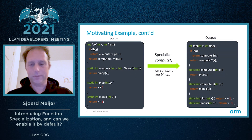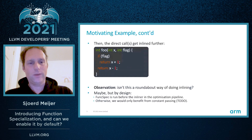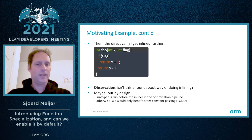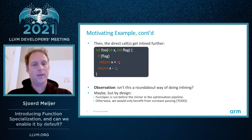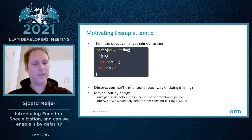For this particular case, it's not the end of the optimization story. What we'd ultimately like to achieve is just to return x plus 1 or x minus 1. We achieve this because function specialization enables further optimizations — in this case, inlining. If this is about inlining, one question is: is this not a roundabout way of doing inlining? Yes, maybe, but it's kind of by design. The inliner by itself is not able to do this, so we use function specialization. Therefore, function specialization is run just before the inliner in the optimization pipeline. Otherwise, we would only benefit from constant passing, which is another valid use case.